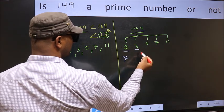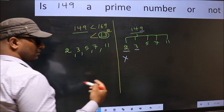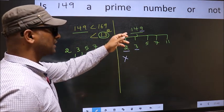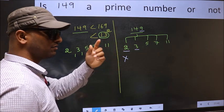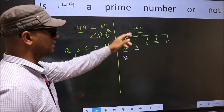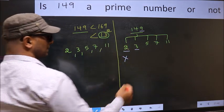Next number 3. To check divisibility by 3, add the digits: 1 plus 4 plus 9 equals 14, and 14 is not divisible by 3. So this number is not divisible by 3.